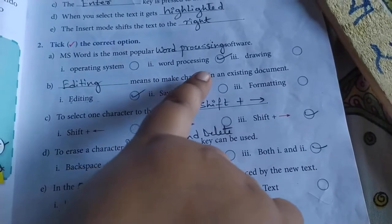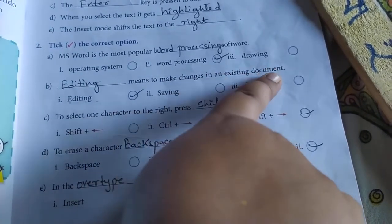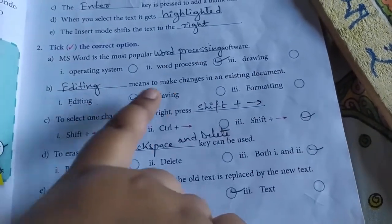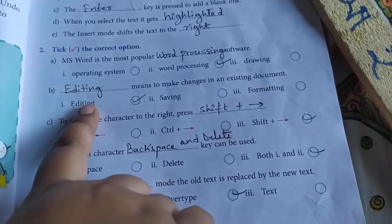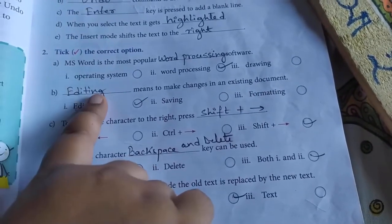Blank means to make changes in an existing document. Options: editing, formatting, saving. Editing is correct. Give a tick and write the answer over here.